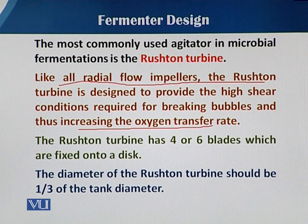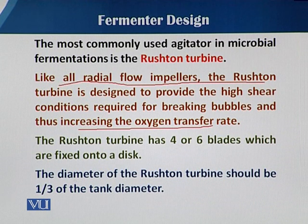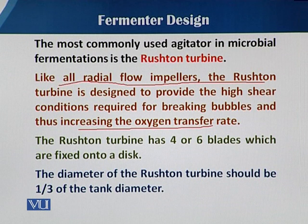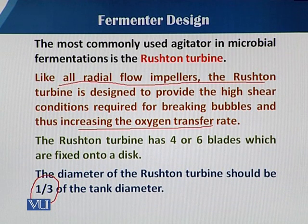In Rushton turbine impellers, the number of blades can be varied from 4 to 6. Some Rushton turbine impellers have 4 blades and some have 6 blades. As we have already discussed regarding the geometrical ratio, the ratio between the Rushton turbine impeller width to the diameter of the fermenter is 0.33 — that is, one third of the total diameter of the fermenter should be the width or the impeller span.